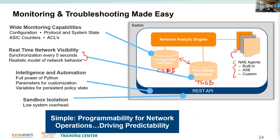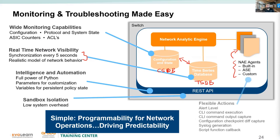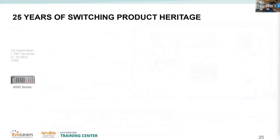Sandbox isolation means what happens in any process will not impact other processes. Similar to email sandboxing, the system creates an environment that mimics the real one, tests the action, and if successful executes the command — if not, it drops it. Flexible actions let you customize what the network analytics engine does when an event or condition arises.